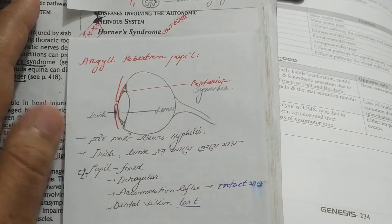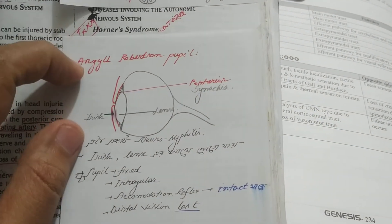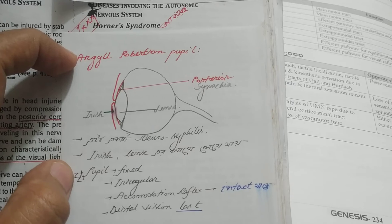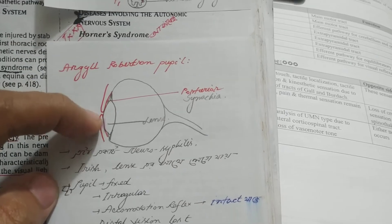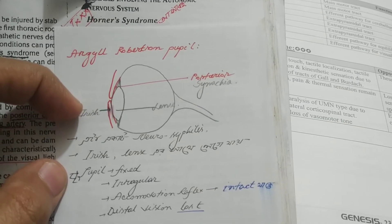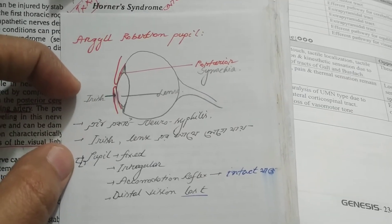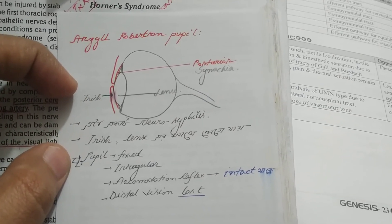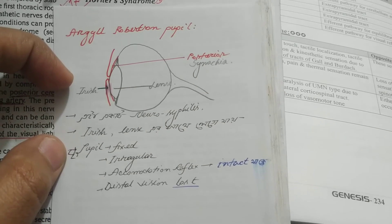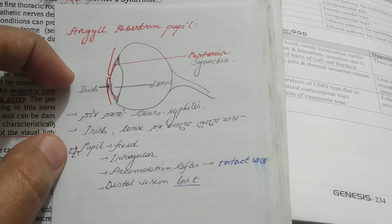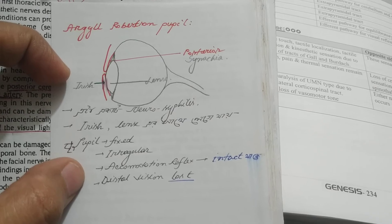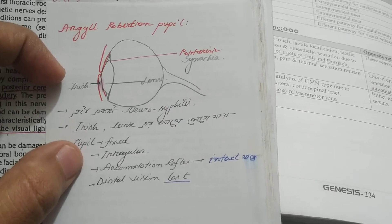Argyll Robertson's pupil is associated with neurosyphilis. The pupil is fixed and does not react to light, but the accommodation reflex is intact. There is also loss of distant vision.